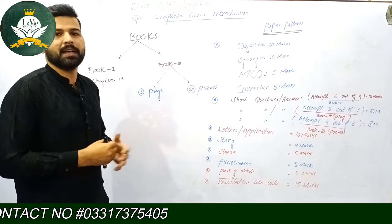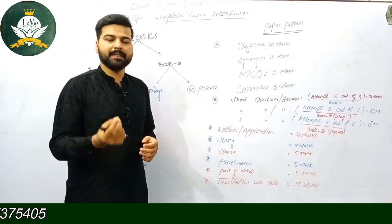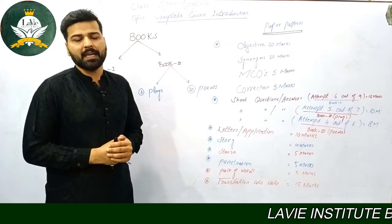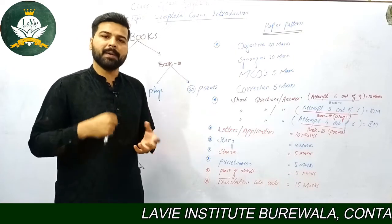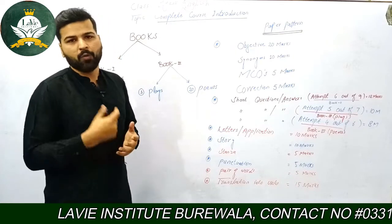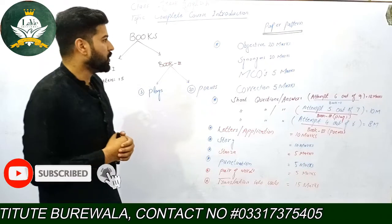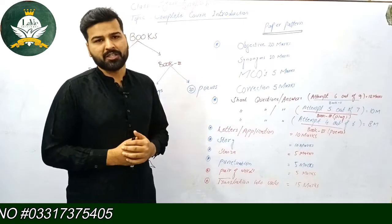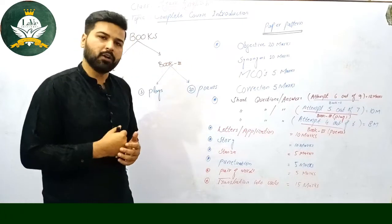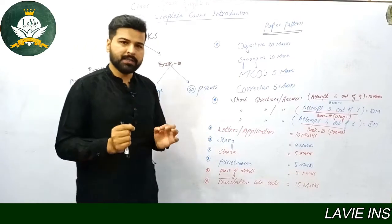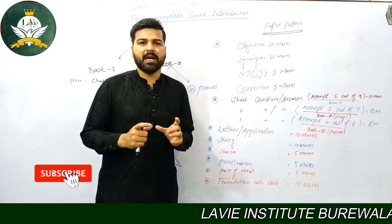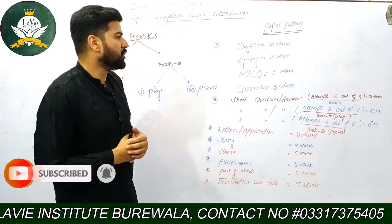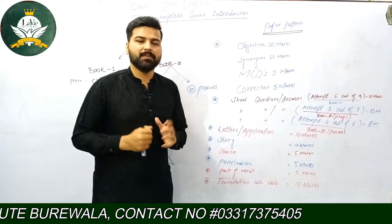تو یہ ہمارے پاس دو books ہیں، اور ان کے اندر ہمیں chapters کا پتہ چل گیا — prose, plays and poems۔ لیکن اب انہیں تیار کس طرح کرنا ہے exams کے لیے، اور exam میں کتنے marks کا paper آئے گا، وہ ہم جانتے ہیں اب۔ ہمارے exam کے اندر جو paper ہے، وہ دو parts پر مشتمل ہوتا ہے: subjective part and objective part۔ Total 100 marks کا آپ کا paper ہے، objective part جو ہے وہ 20 marks پر مشتمل ہے، اور subjective جو آپ کا part ہے وہ 80 marks پر مشتمل ہے۔